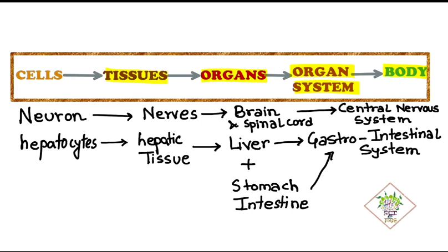Now let's discuss an example. Neurons are the cells of the central nervous system which forms the nerves. So neuron is the cell and nerves are the tissues. These nerves join together to form brain and spinal cord. Together the brain and the spinal cord forms the system which is known as the central nervous system.